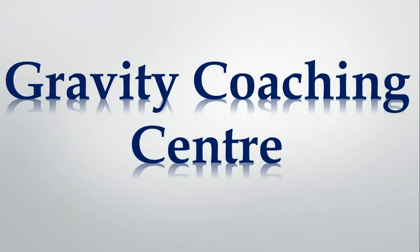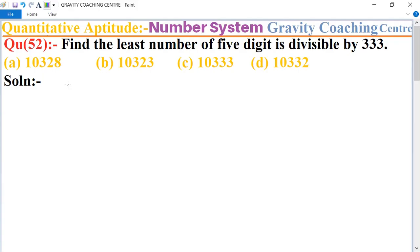Welcome to our channel Gravity Coaching Center, the aptitude chapter number system. Question number 52: Find the least number of five digits divisible by 333. In this question, first we write the least five digit number.